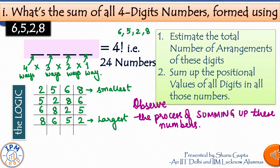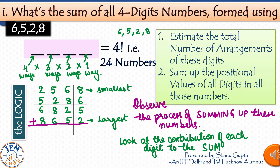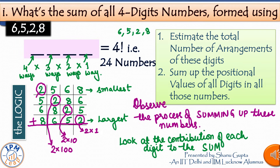Now pick any one digit, say digit 2, and look at its contribution to the sum. In the number 2568, digit 2 contributes 2 × 1000 because it is in the thousands place. In 6825, digit 2 contributes 2 × 1. In 5286, digit 2 contributes 2 × 10. And in 8652, digit 2 contributes 2 × 100. Let's now figure out the total contribution of digit 2 across all 24 numbers.